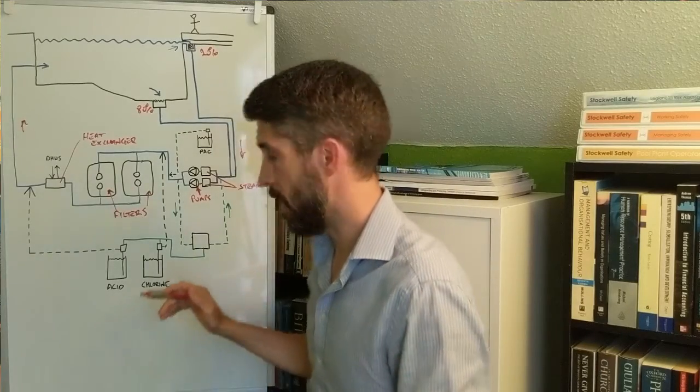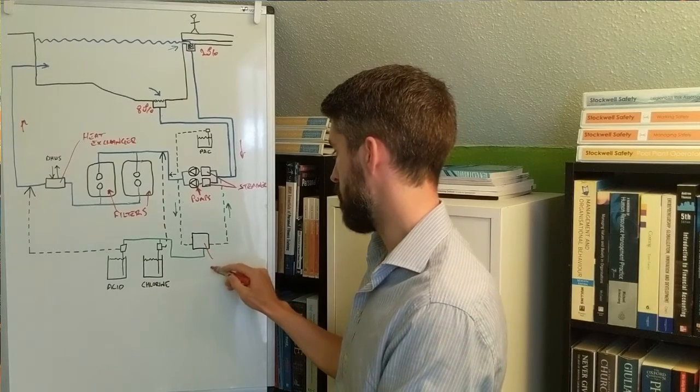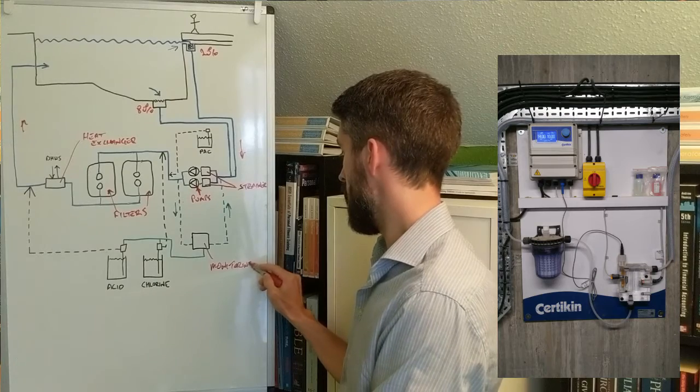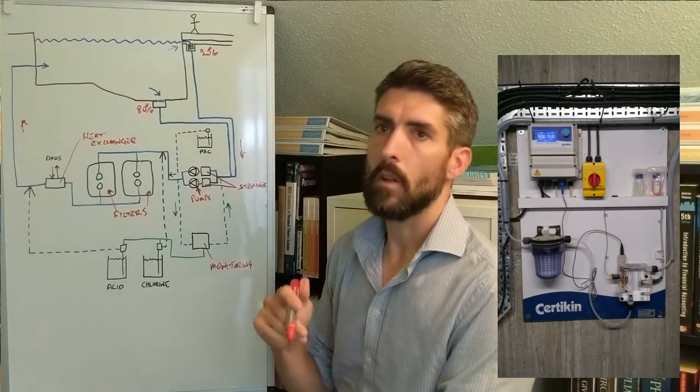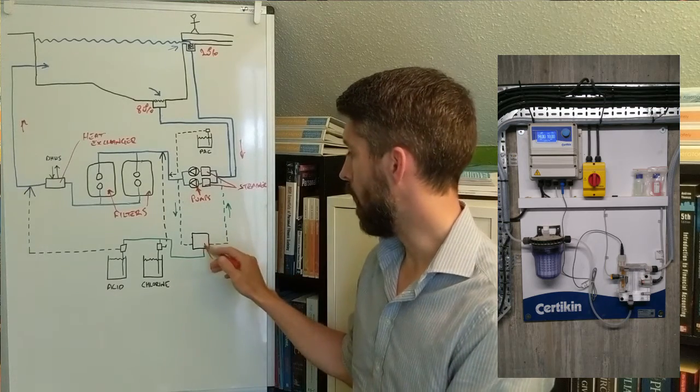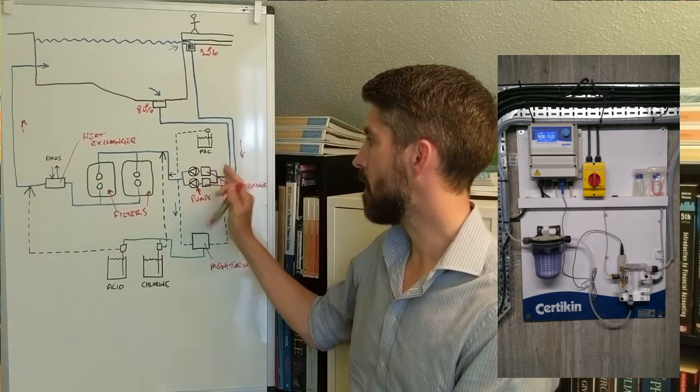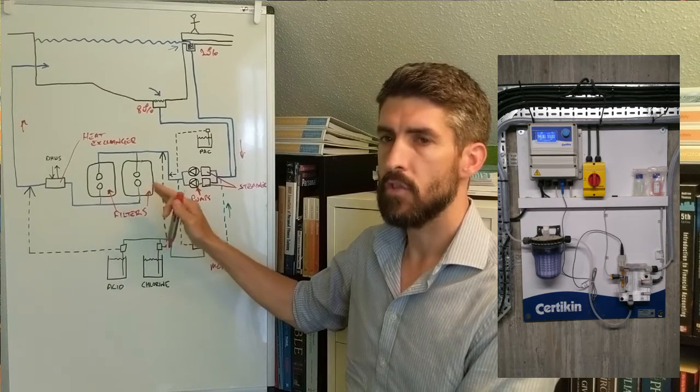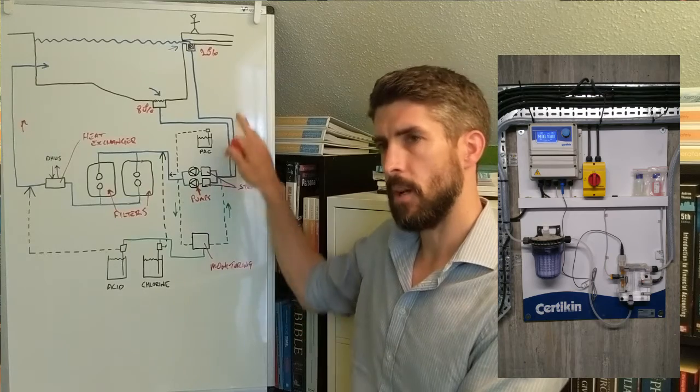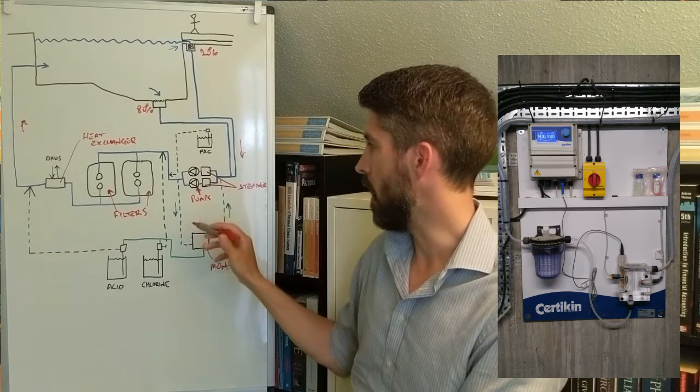Other things to point out: what you'll typically also have in a commercial swimming pool is some sort of monitoring equipment that will be continually testing the pH and the free chlorine level. There'll be a sample taken from the delivery side. Anything downstream of the pump is referred to as the delivery side, whereas anything upstream of the pump in terms of water flow is referred to as the suction side.